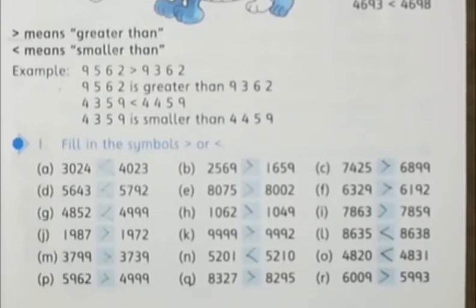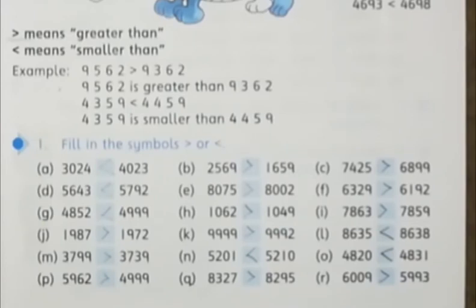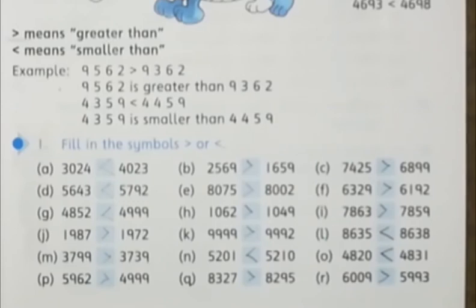But the difference here is that in our previous grades we did greater than and smaller than with smaller numbers — like 1 digit number, 2 digit number, 3 digit number. But here we are going to solve it with 4 digit numbers. So you must keep in mind that while placing the sign, you have to compare the values properly — which value is bigger or smaller — before putting any sign.